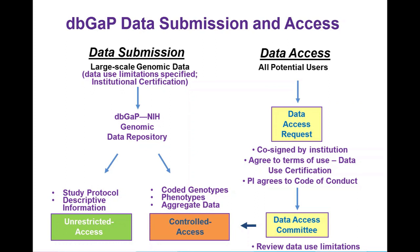On the data access side, for all those individuals interested in accessing the data, they must submit a data access request, or a DAR. Those requests are co-signed by the institution, and they agree upon the terms of access specified in the data use certification agreement. The PI agrees to a code of conduct — that they won't transfer the data, that they'll only use it for the purposes indicated in the application, and that they won't attempt to re-identify individuals. Those requests are then reviewed by the data access committee, also the DAC, which reviews them for consistency with the data use limitations specified by the submitting institution. If the requestor is granted access, they will then be able to access the controlled access data.